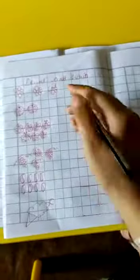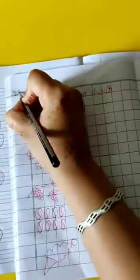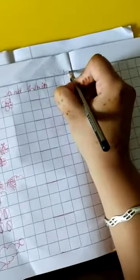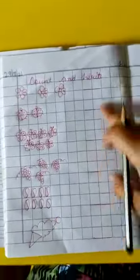Open your maths notebook. Write down the date: 29, 7, 21. Write down homework here. Count and write. There are some objects. You should count and write the correct number here.